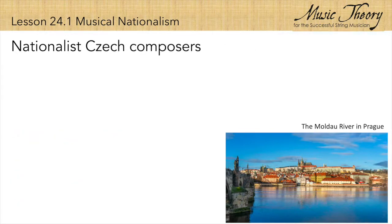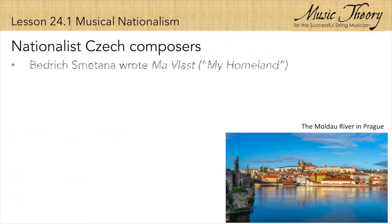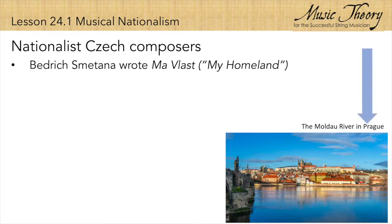Bedřich Smetana was a Czech composer who wrote a collection of tone poems called Ma Vlast, or My Homeland. These works depict Czech landscapes and folklore. The second poem in this collection is about a river called the Moldau, which is frequently performed by itself.